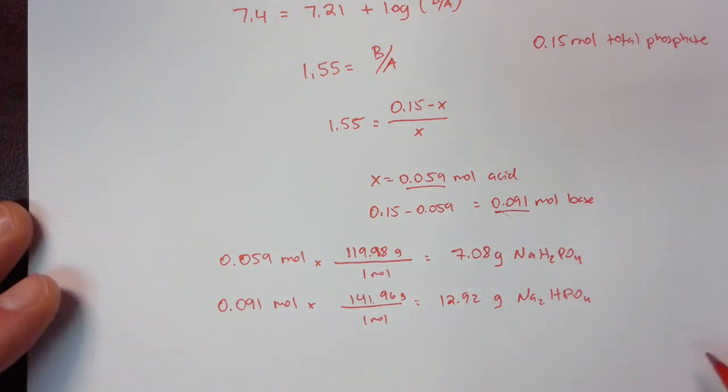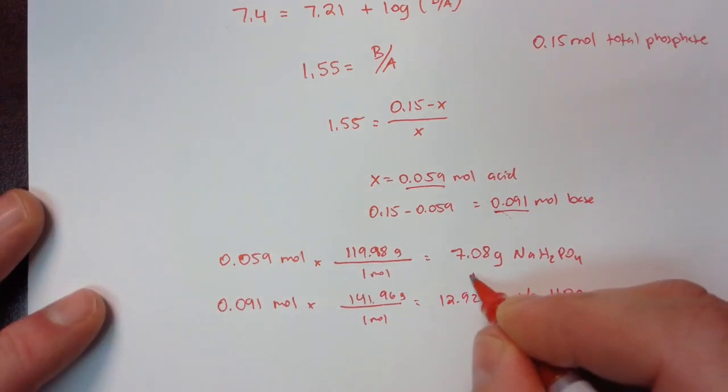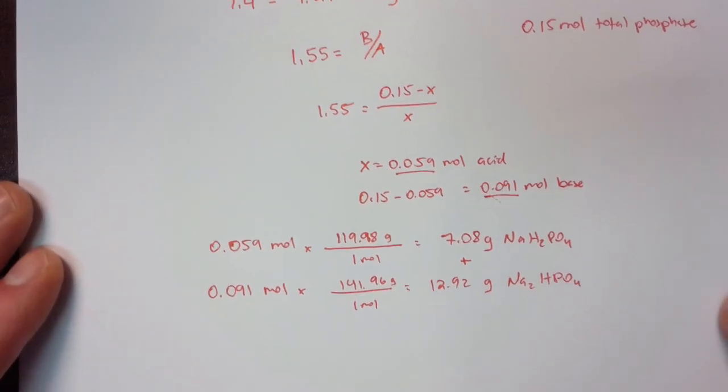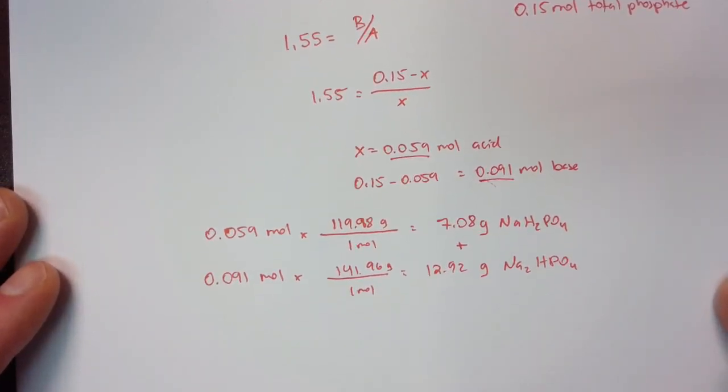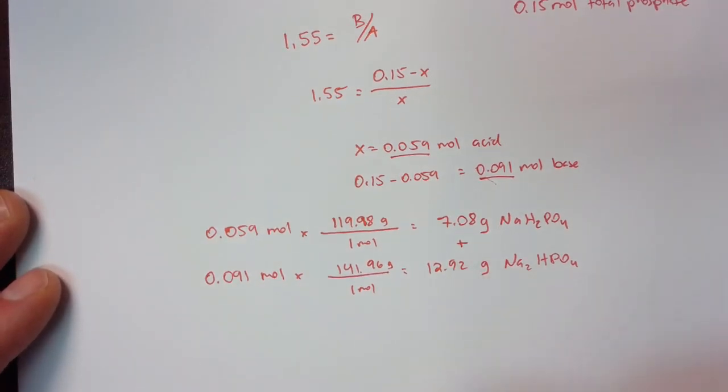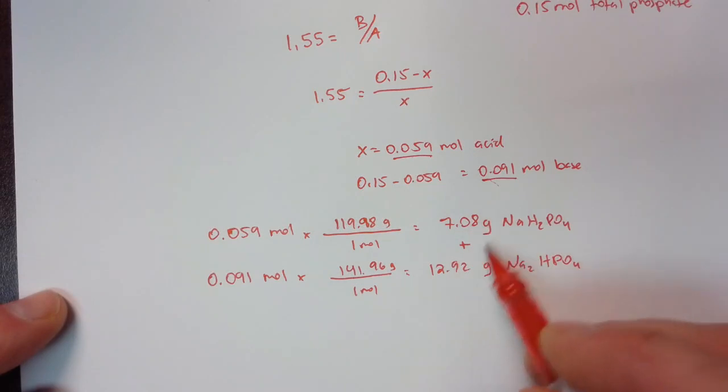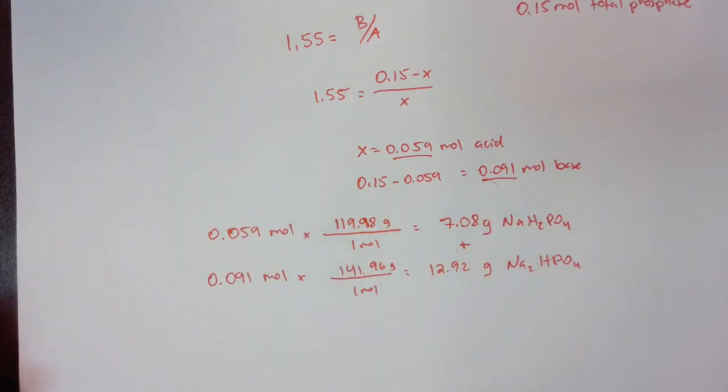So basically what you would do in the lab is you would add these two together in some amount of water less than one liter and dissolve them. And then you would add water up to one liter. And then that would give you the correct concentration as well as the correct pH. And you may need to go in and check the pH with a pH meter and adjust it with acid or base after this. But if you've done your measurements right, it should come out very, very close to pH 7.4.